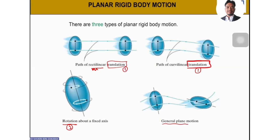For translation, it can occur in two ways: either translating straight from left to right (rectilinear), or translating along a curve (curvilinear). For example, an object shaped like a rugby ball moving left to right — even though it moves along a curve, its orientation remains the same, still vertical. So that is curvilinear translation.